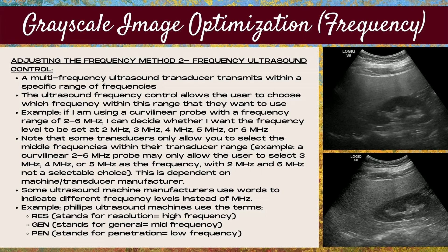Some ultrasound machine manufacturers use words to indicate different frequency levels instead of megahertz numbers. For example, Philips ultrasound machines use the terms RES, GEN, and PEN. RES stands for resolution and is the highest frequency level. GEN stands for general and is a mid-frequency level. PEN stands for penetration and is a low-frequency level.